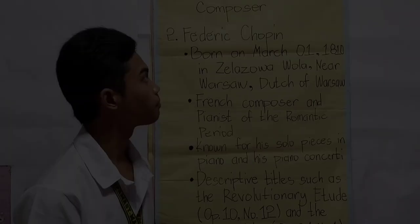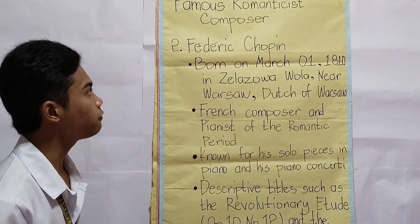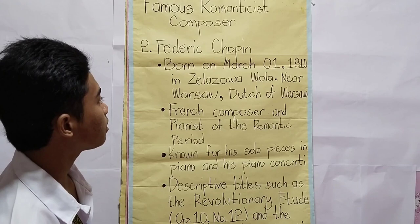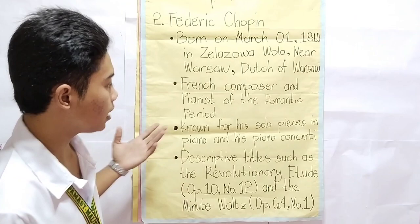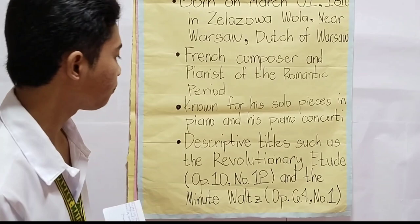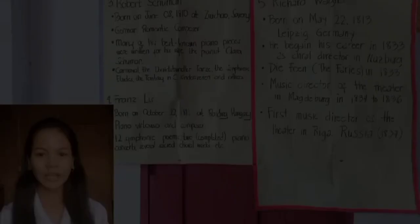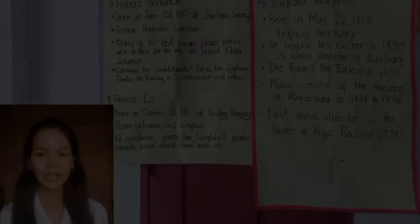Another famous Romanticist composer is Frédéric Chopin, born on March 1, 1810 in Żelazowa Wola, near Warsaw. He was a French-Polish composer and pianist of the Romantic period. He is known for his solo pieces for piano and his piano concerti, with descriptive titles such as the Revolutionary Étude and the Minute Waltz.